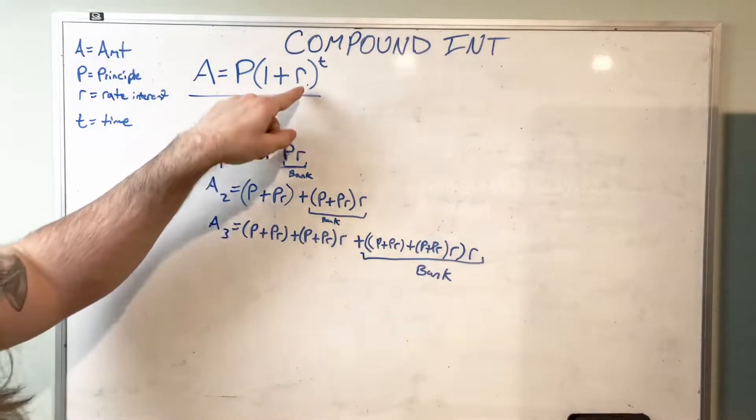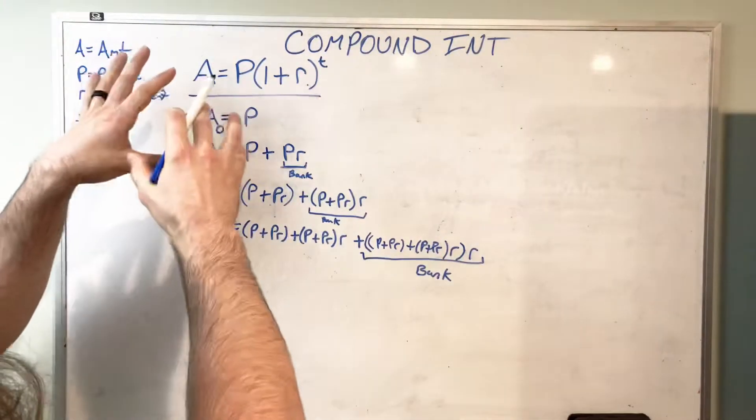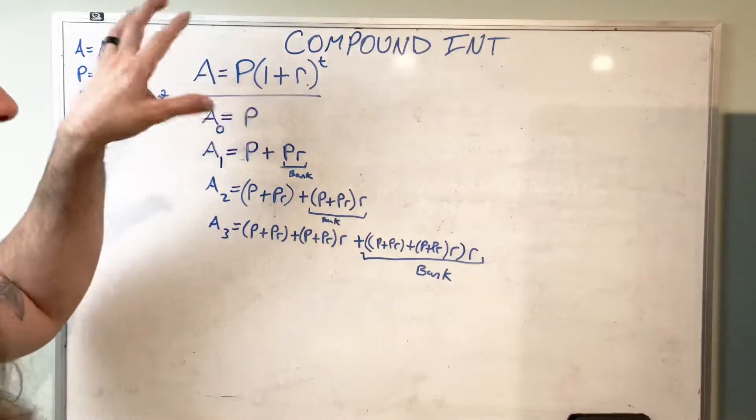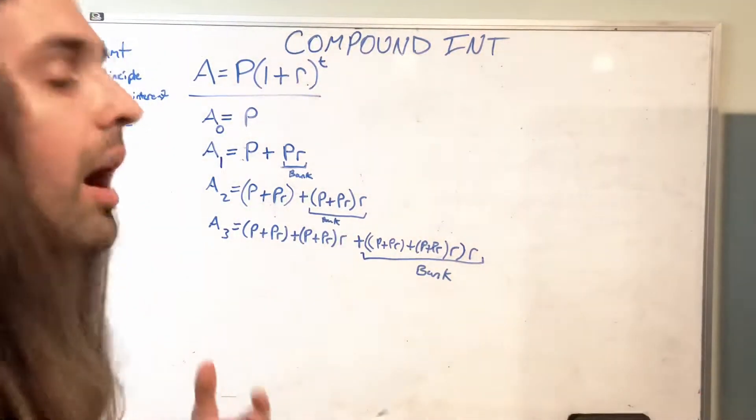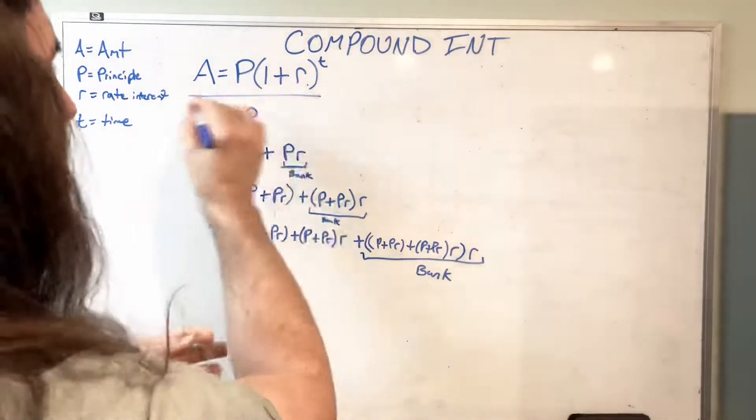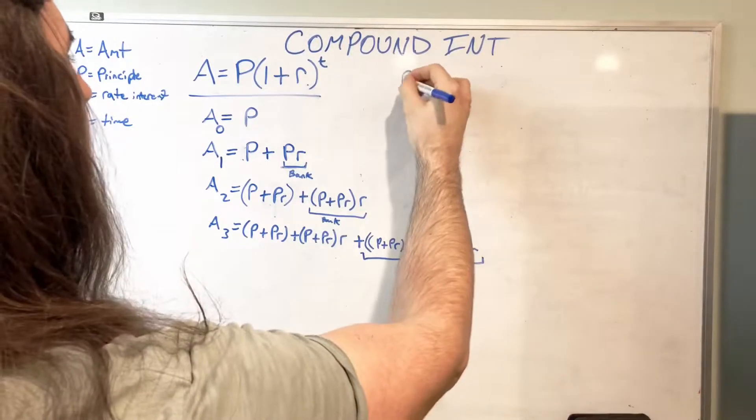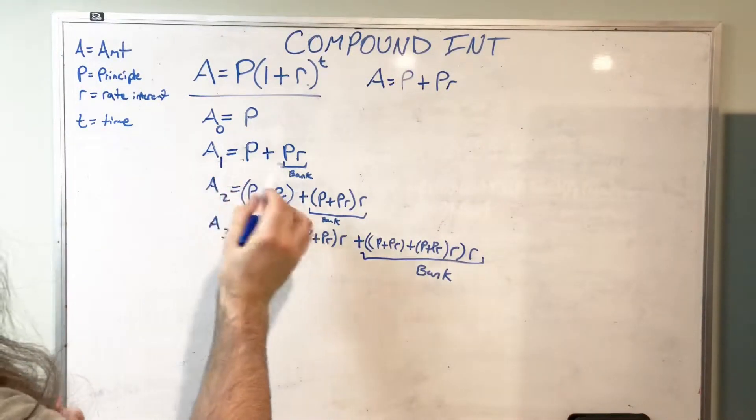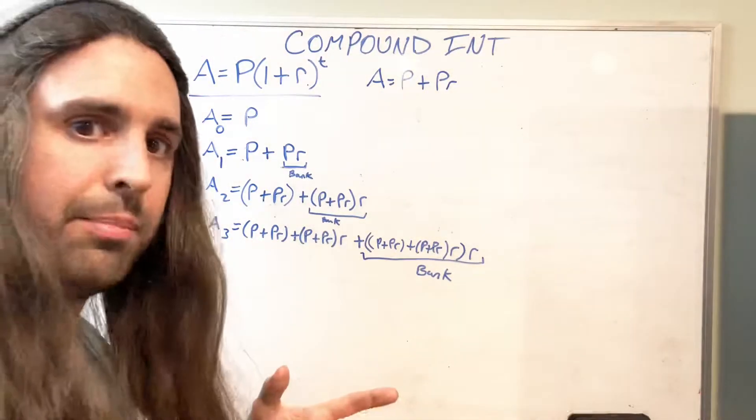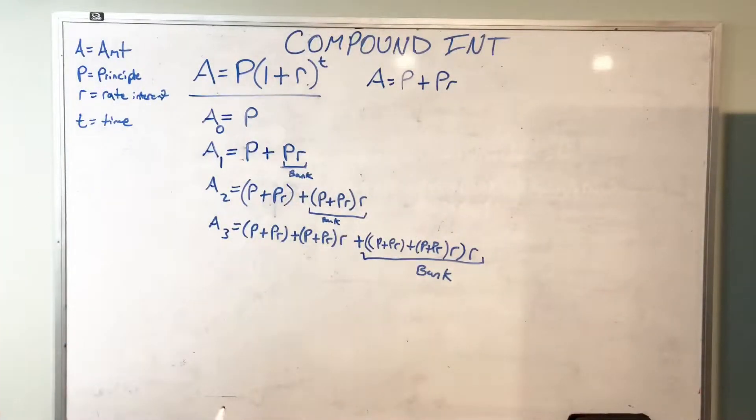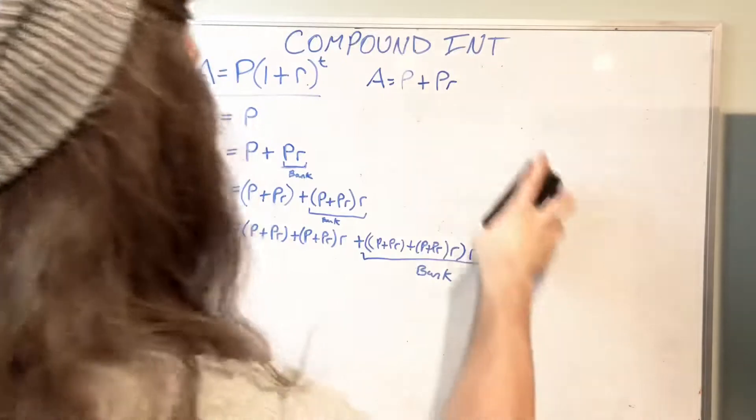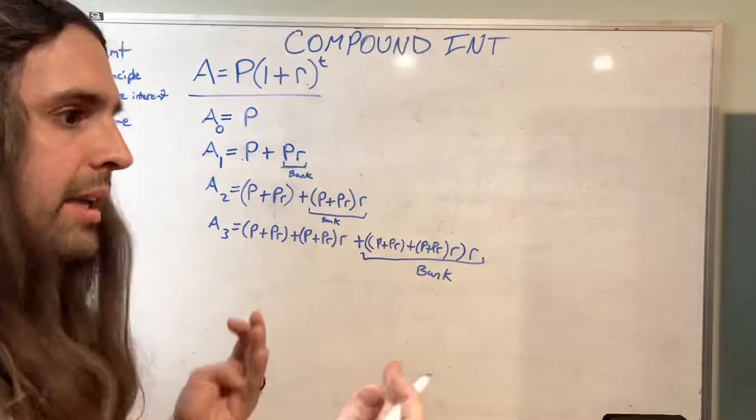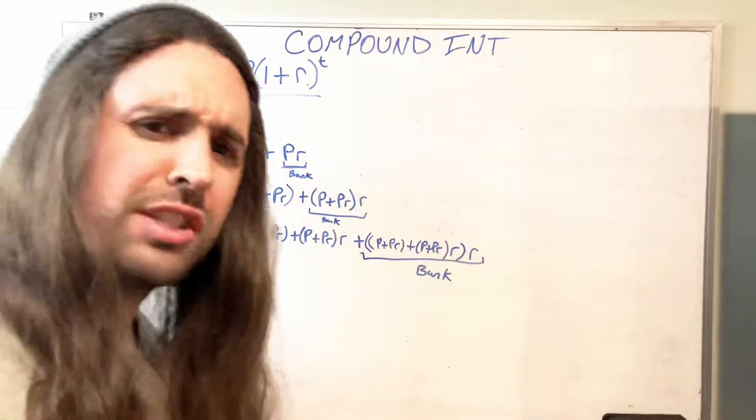This is the compound interest formula, where A is the amount after this compound interest formula has occurred. P is the principal amount, the initial amount you put in. We're not going to consider any kinds of monthly additions, just the very basic so you can understand this at a very basic level first. R is the rate, the interest rate. This can be adding or subtracting based on if this is a credit card or a bank account. And T is the amount of time and the number of compounds.